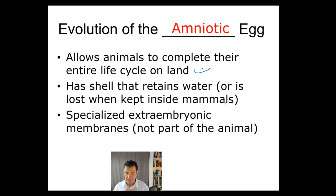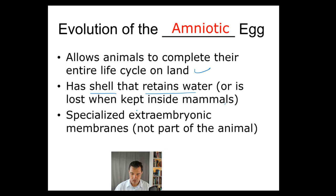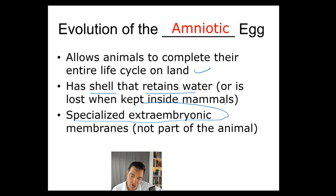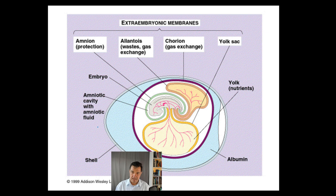The amniotic egg has a shell that retains water and prevents it from drying out. In the case of mammals, which are also amniotes, that hard outside shell is lost in evolutionary history. But the same sort of structures involved with the amniotic egg are still present in mammals with some modifications. There are specialized extra-embryonic membranes — extra-embryonic means these membranes are part of the egg, not part of the embryo, and they are what make the amniotic egg viable and able to survive.